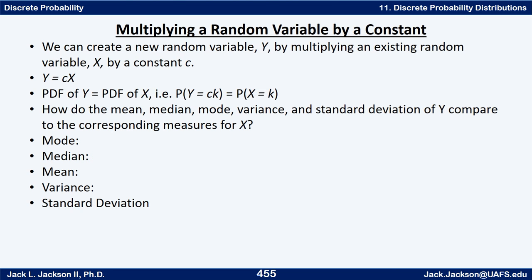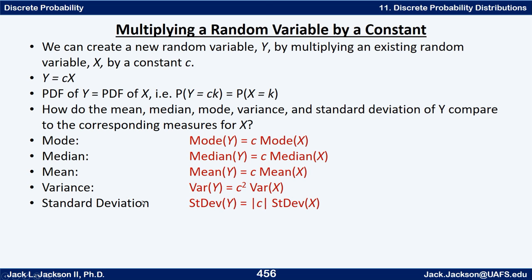Now what if we multiply an existing random variable x by a constant c to get y, so y equals c times x? The mode, median, and mean of y are all just multiplied by c — every single value is multiplied by c, so the bar that was highest stays highest (its x-value is now c times larger), and the median and mean scale the same way.